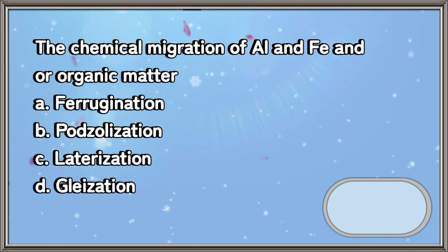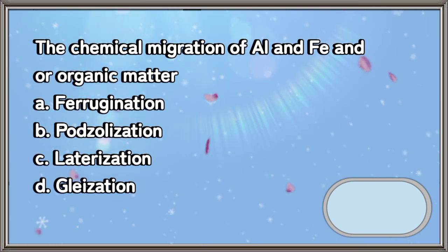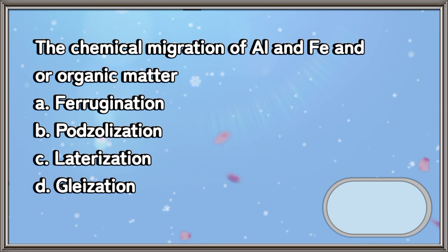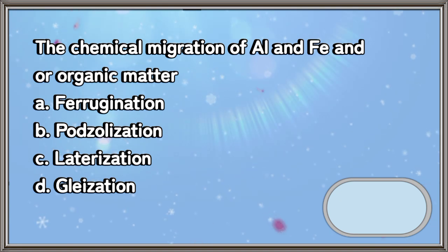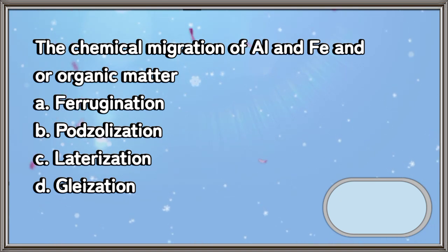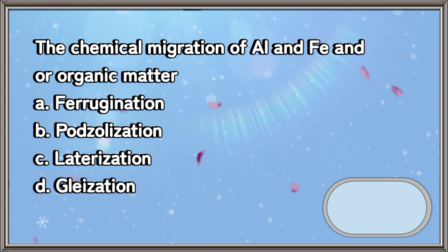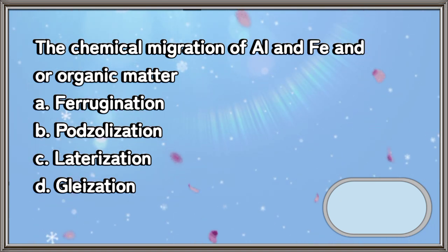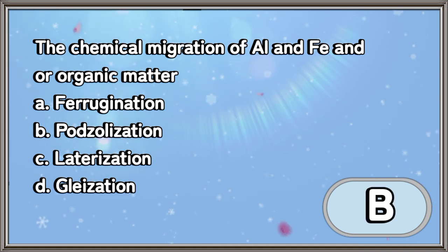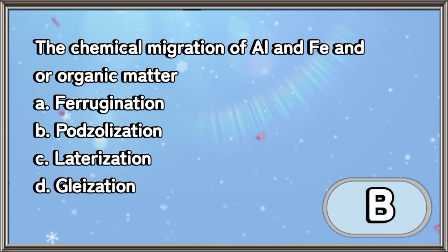The chemical migration of aluminum, iron, and/or organic matter: A. Ferrugination, B. Podzolization, C. Laterization, D. Gleization. The answer is letter B.